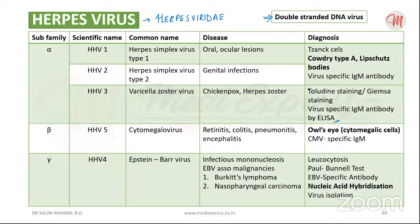For diagnosis of cytomegalovirus, the most important finding is owl's eye — enlarged cells with large intranuclear inclusions. These cytomegalic cells can be demonstrated in centrifuged deposits from urine and saliva. Serologically, cytomegalovirus-specific IgM can be detected in serum by ELISA. Owl's eye inclusion is a very important diagnostic feature.